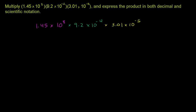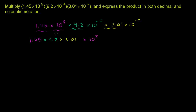All this means is I'm multiplying these three expressions together. And since everything involves multiplication, it doesn't matter what order I multiply in. So I can rearrange: 1.45 times 9.2 times 3.01, and then separately, times 10 to the 8th, times 10 to the negative 12th, times 10 to the negative 5th.